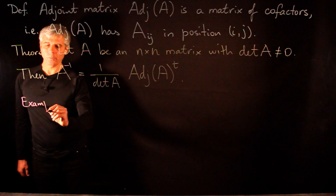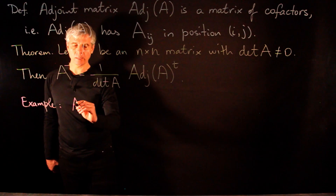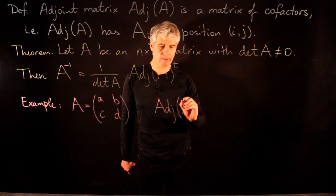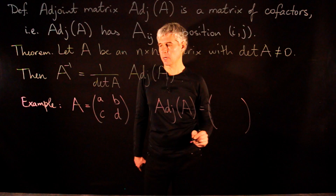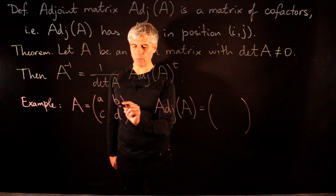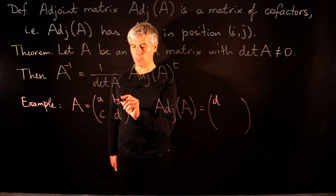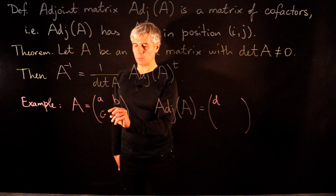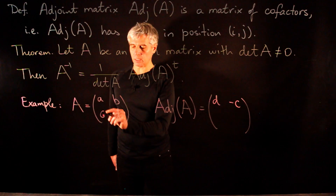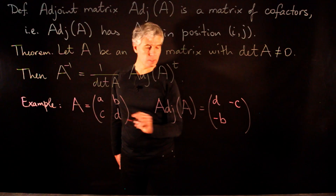Let us do an example with a 2 by 2 matrix. Suppose A is the matrix [a, b; c, d]. The adjoint matrix is again 2 by 2. The first cofactor (erase first row and column) gives d with positive sign; the second cofactor (erase first row and second column) gives c with negative sign, so minus c. Then the third cofactor is minus b, and the last cofactor is a.